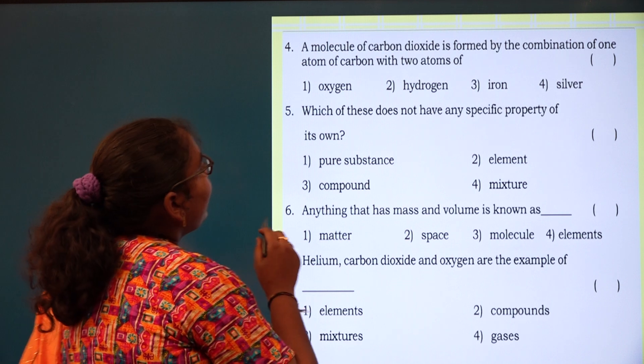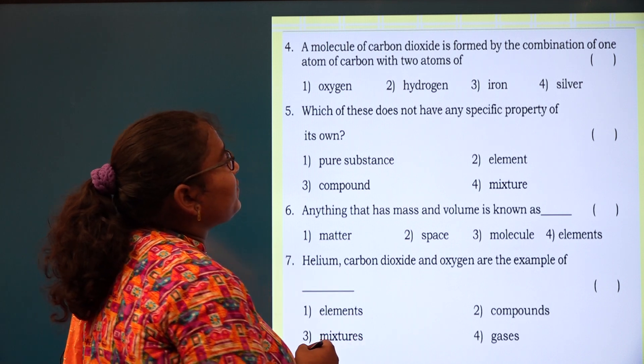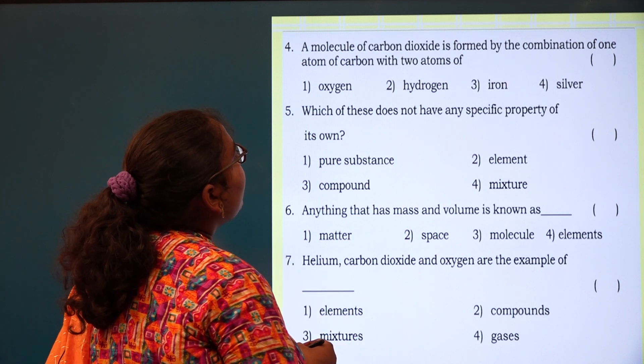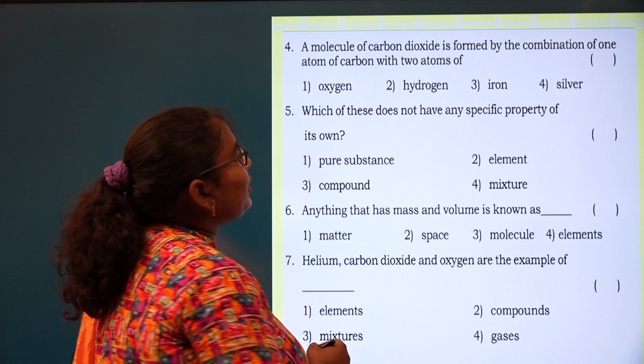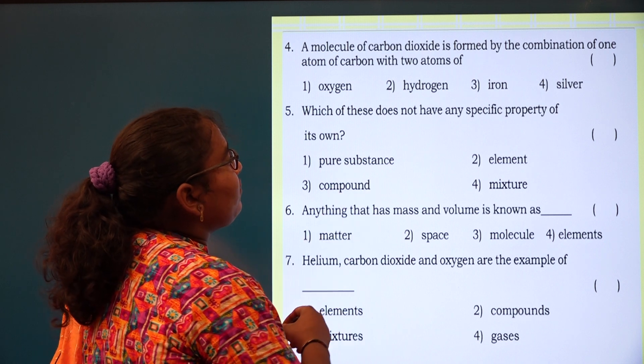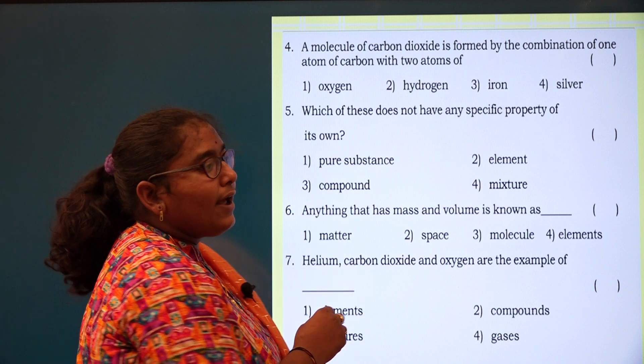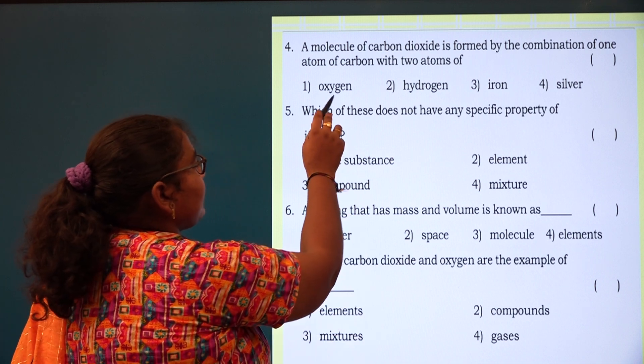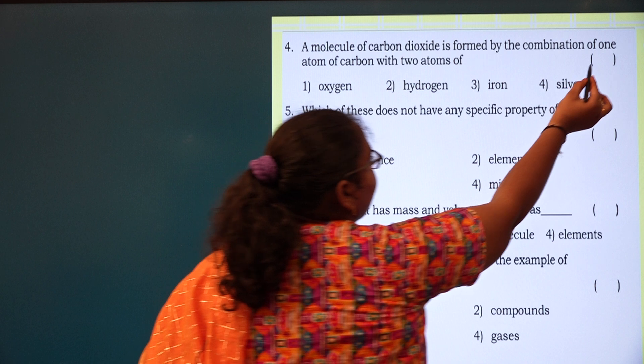Next one: a molecule of carbon dioxide is formed by the combination of one atom of carbon with two atoms of what? How carbon dioxide will form? One atom of carbon and two atoms of oxygen. What is the option? Option 1.